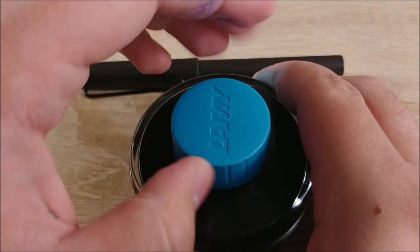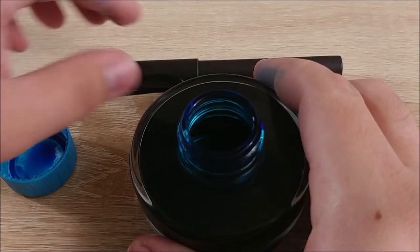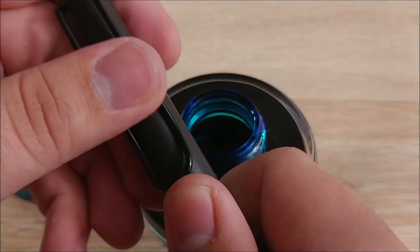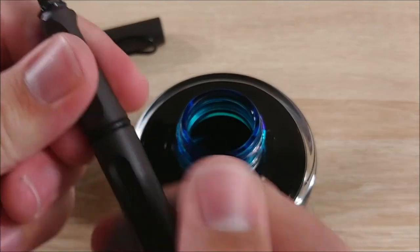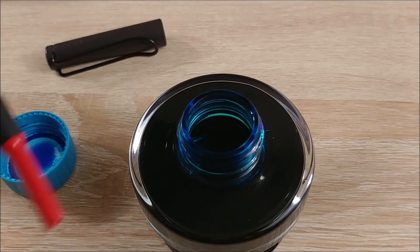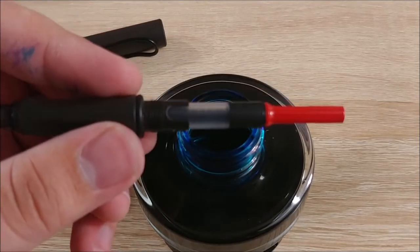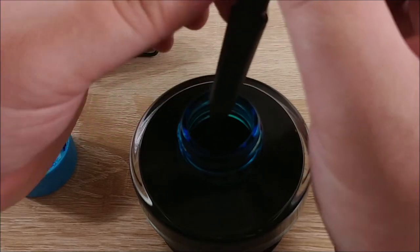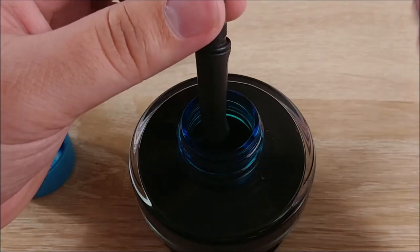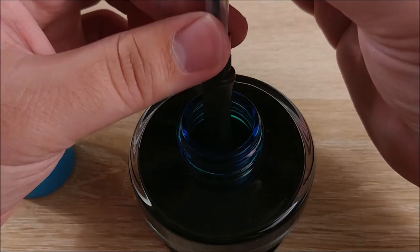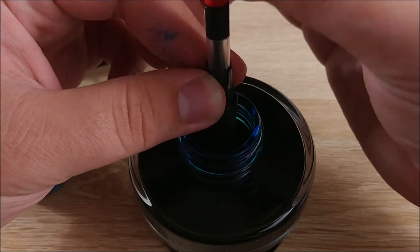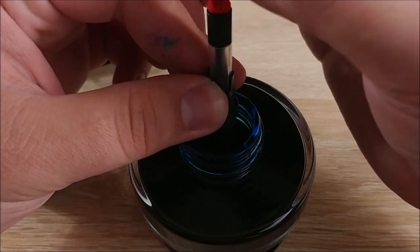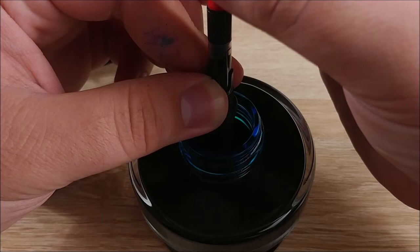To fill a converter pen, you're going to take your bottle of ink, unscrew the lid, and grab your pen. Uncap it, unscrew the body, and make sure that your converter piston is pushed all the way down. That's ready to suck up that ink. Go ahead and submerge your pen. The nib needs to go all the way in the ink and even a little bit of the section, and you can go ahead and start twisting the piston in the opposite direction from which you twisted it down.